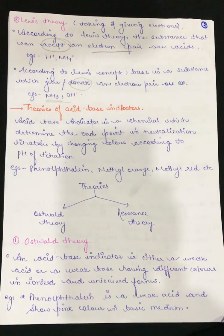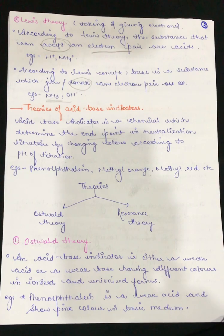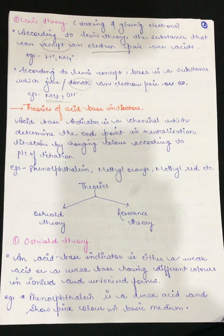When we take acid in a conical flask and our burette substance is our base, as we add the base to the acid, we reach a neutralization point. When the mixture is neutralized, a color change occurs due to the presence of the indicator, and this indicator gives us the end point. Examples of acid-base indicators include phenolphthalein, methyl orange, methyl red, and many more.